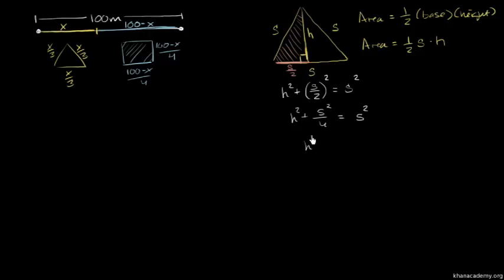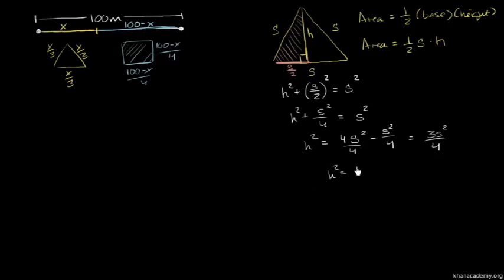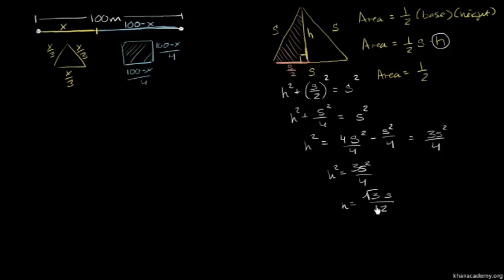h squared plus s squared over 4 equals s squared. Only power: h squared equals s squared minus s squared over 4. h squared equals 3s squared divided by 4. Square root: h equals square root of 3, divided by 2.